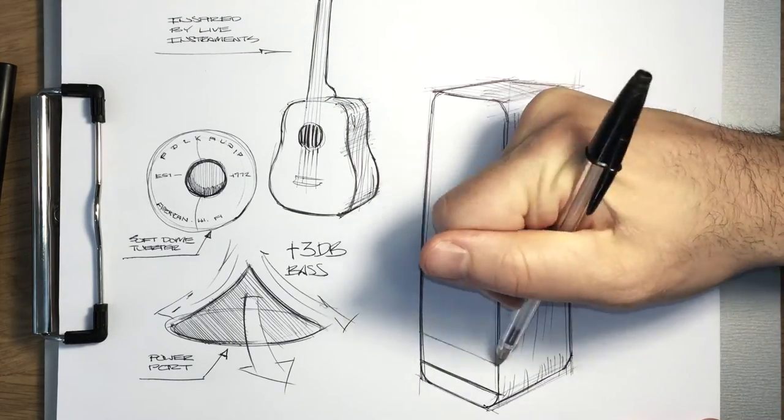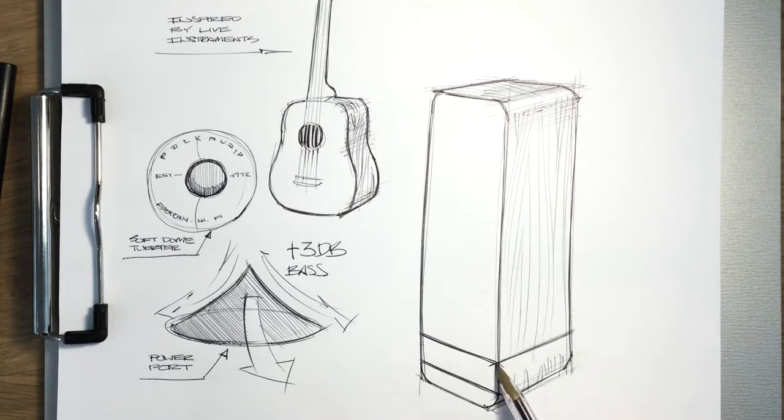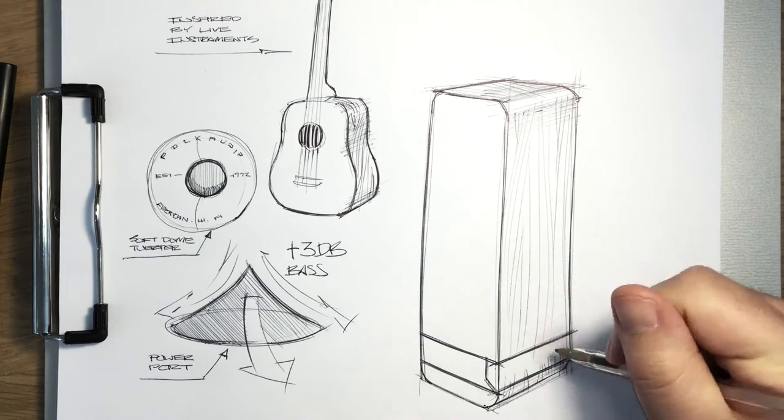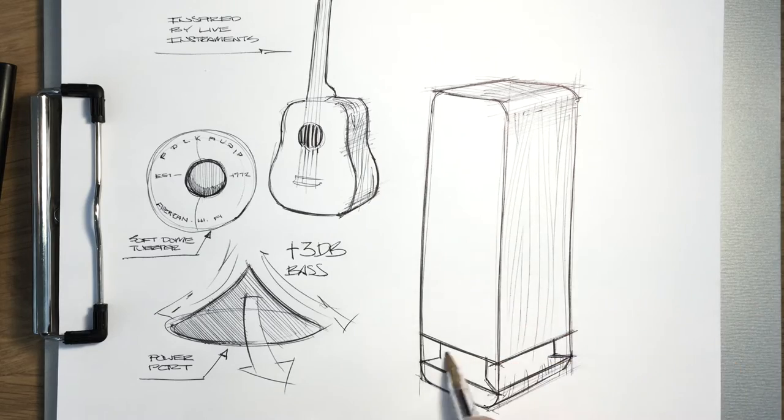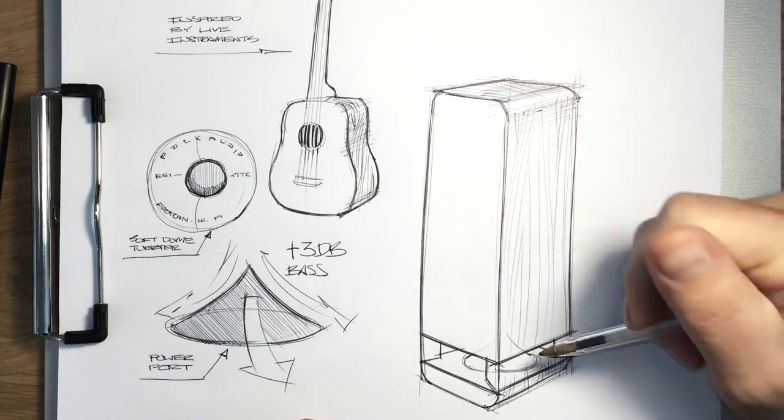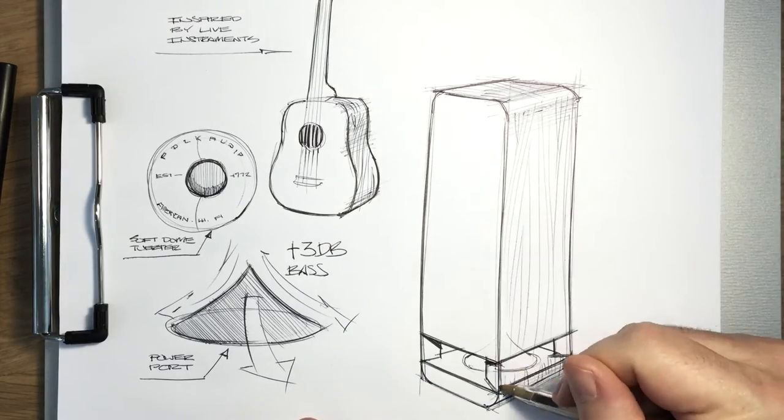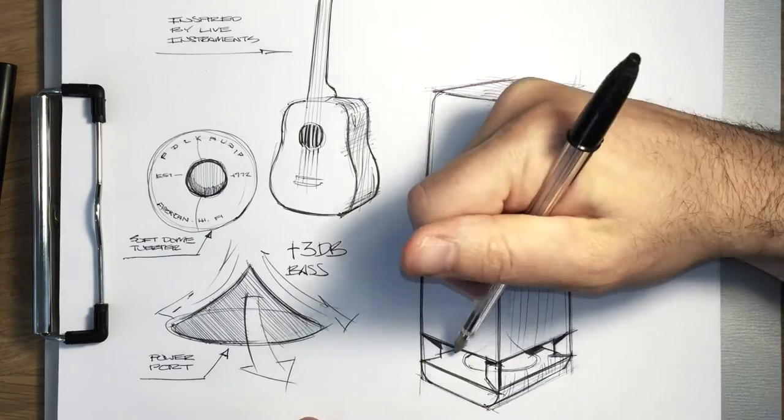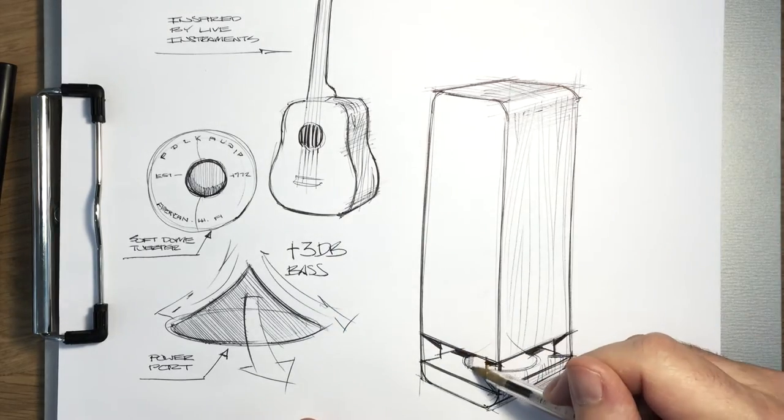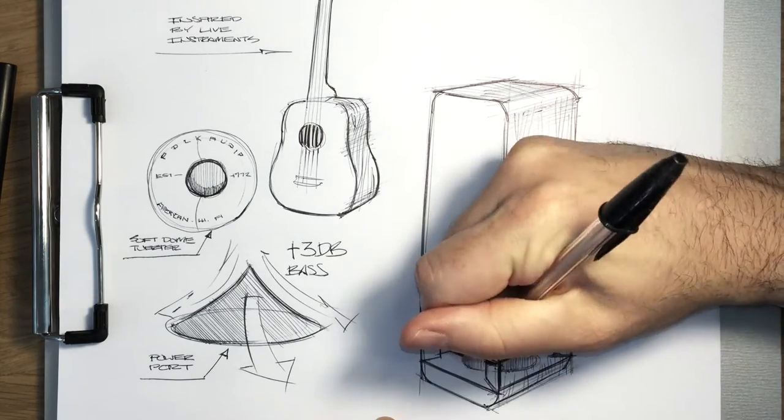The next thing we did is, as we integrated the power port, we brought it to the bottom of the speaker. In our RTI series, it's on the back of the speaker. We moved it to the bottom so the speaker could be placed more easily. The increased bass performs better because we have a larger surface area there. And we also brought this nice metal badge to the front of the speaker.